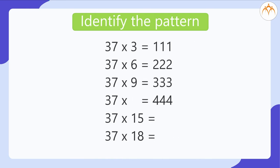Identify the pattern and fill in the blank. 37 multiplied by 3 is equal to 111. 37 multiplied by 6 is equal to 222. 37 multiplied by 9 is equal to 333. 37 multiplied by how much will be equal to 444? 37 multiplied by 15 is equal to what? 37 multiplied by 18 is equal to what? 12, 555, 666.